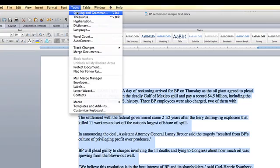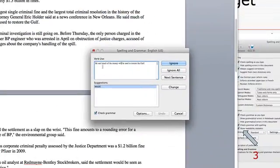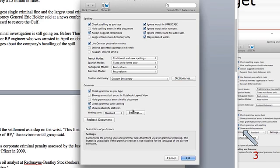Then under Tools, I go Spelling and Grammar, Options, and I make sure that Show Readability Statistics are checked.